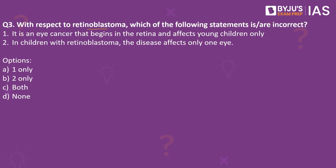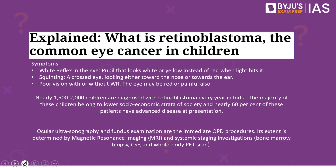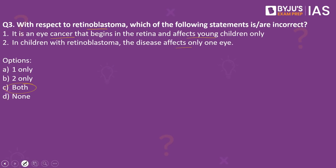Now let's look into the next practice question. With respect to retinoblastoma, which of the following statements is or are incorrect? First, it is an eye cancer that begins in the retina and affects young children only. Second, in children with retinoblastoma, the disease affects only one eye. Since it is asking for the incorrect statements, the answer is both. This article on the Indian Express makes a reference to retinoblastoma. The first statement is incorrect because, while in most cases it affects children, in rare cases it may also affect adults.